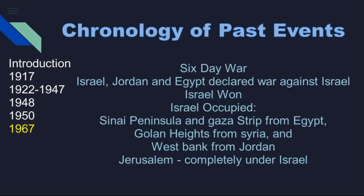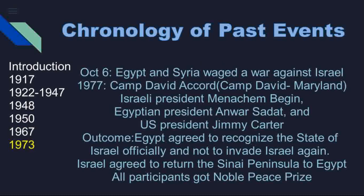In 1967, Syria, Jordan, and Egypt together declared war against Israel. This time also Israel won, with the help of the United Kingdom and the United States of America. Subsequently, Israel occupied a large portion of land — the Sinai Peninsula and Gaza Strip were acquired from Egypt, the Golan Heights were occupied from Syria, and the West Bank region from Jordan. With this, Jerusalem, which was until then under UN control, was completely transferred to Israeli control.